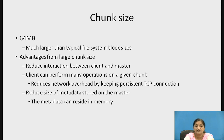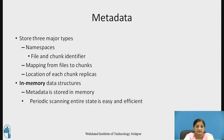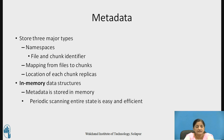This metadata resides in main memory. Metadata can be of three types: first, namespaces consisting of file and chunk identifiers; second, mapping from files to chunks; and third, the location of each chunk's replicas. Since metadata is stored in main memory, scanning it is quite easy and efficient.